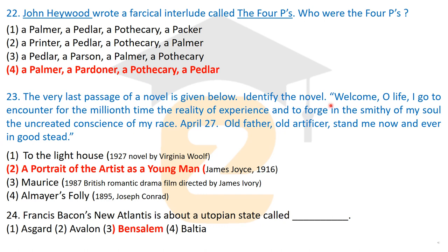Question twenty-three: the following is the last passage of a novel — identify the novel. The passage reads: 'Welcome, O life! I go to encounter for the millionth time the reality of experience and to forge in the smithy of my soul the uncreated conscience of my race. April 27... old father, old artificer, stand me now and ever in good stead.' The correct answer is 'A Portrait of the Artist as a Young Man' by James Joyce, published in 1916.